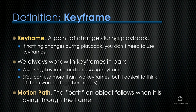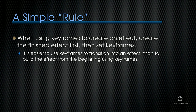A keyframe is a point of change during playback. If nothing changes during playback you don't need to use keyframes. We always work with keyframes in pairs — there's a starting keyframe and an ending keyframe. You can use more than two keyframes, but it's easiest to think of them working in pairs: where does an effect start, where does that change end? A motion path is the path an object follows when it's moving through the frame. There's a simple rule: create the finished effect first, then set keyframes.